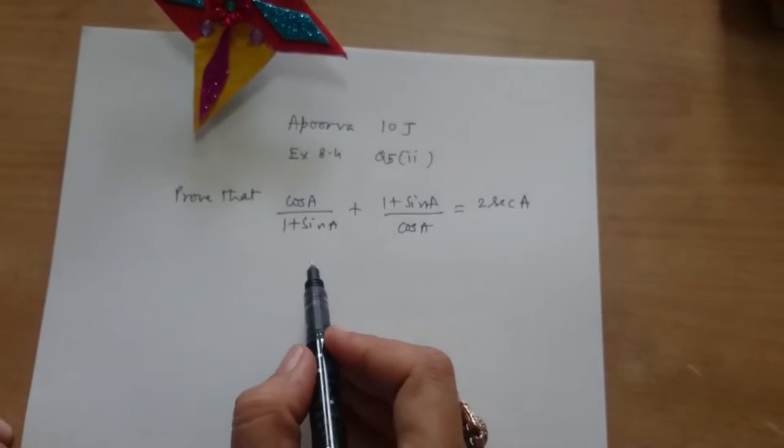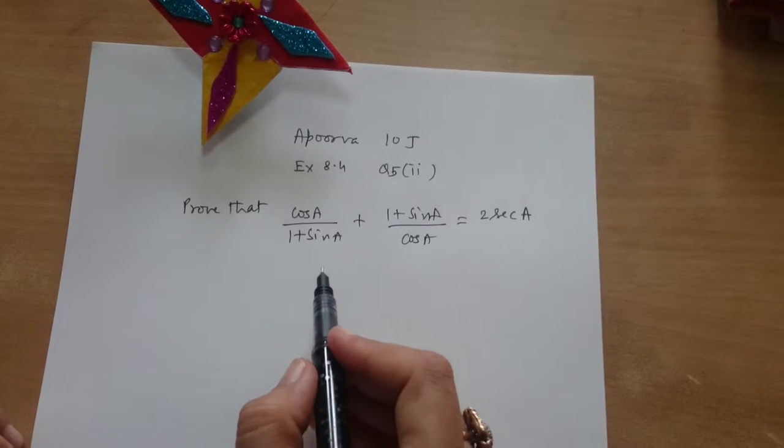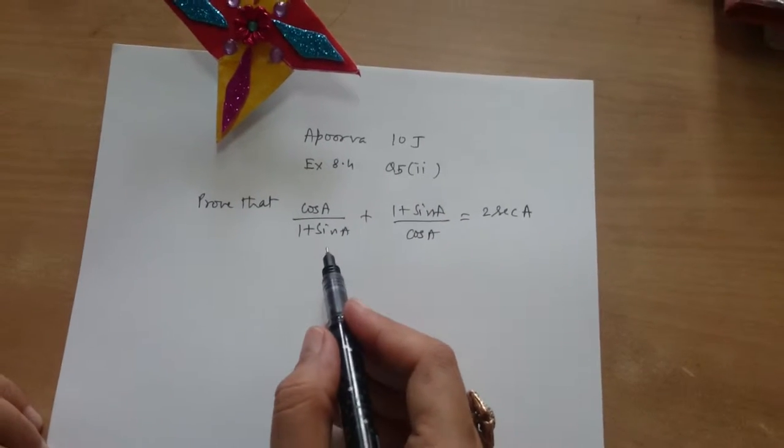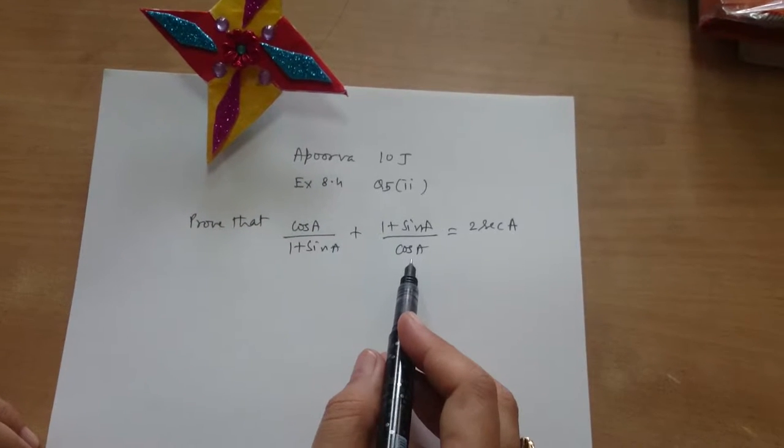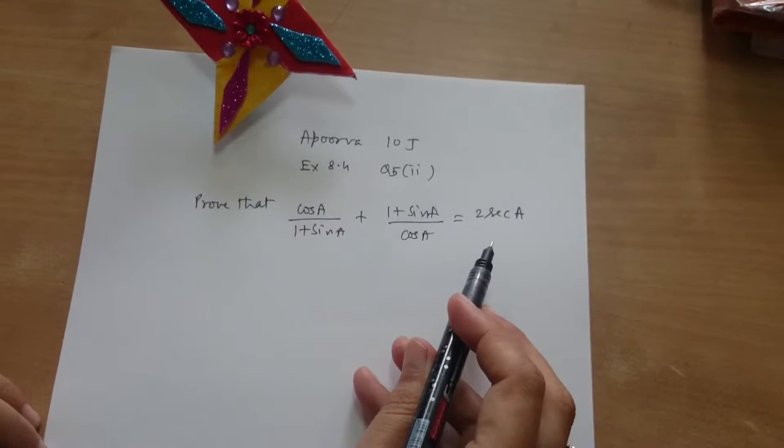Apoorva, solve this question. First we have to do left hand side. Read the question first. Cos A upon 1 plus sin A plus 1 plus sin A upon cos A is equal to 2 sec A.